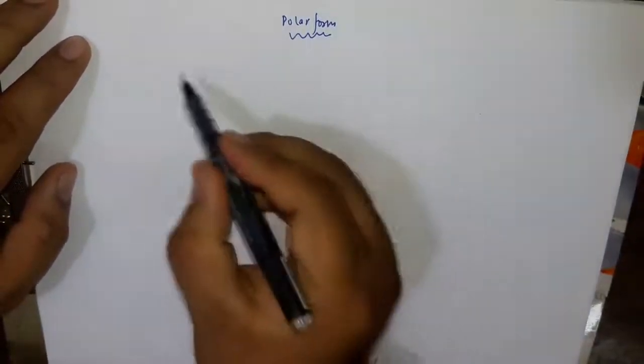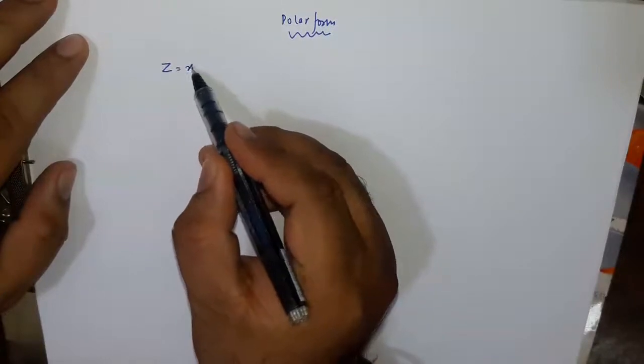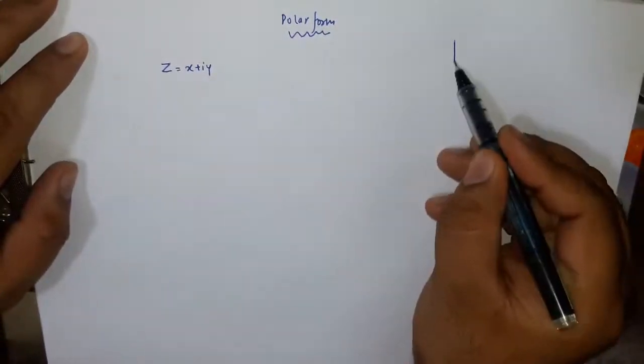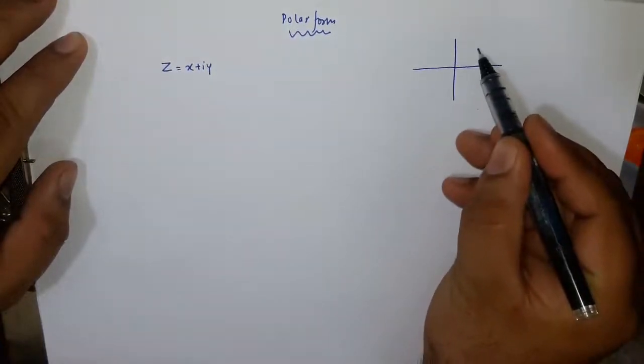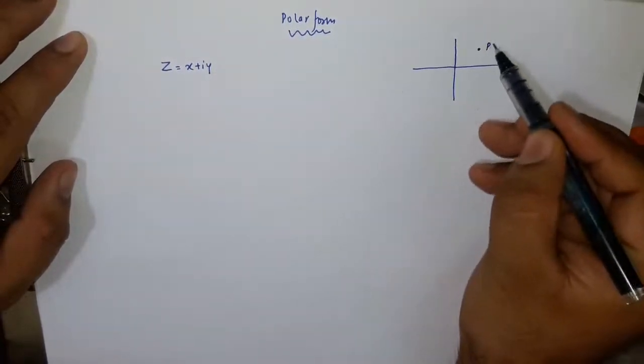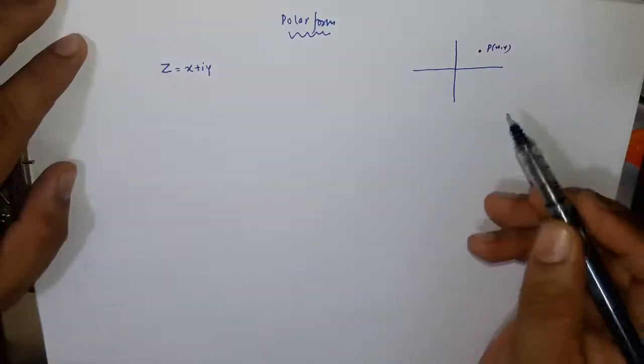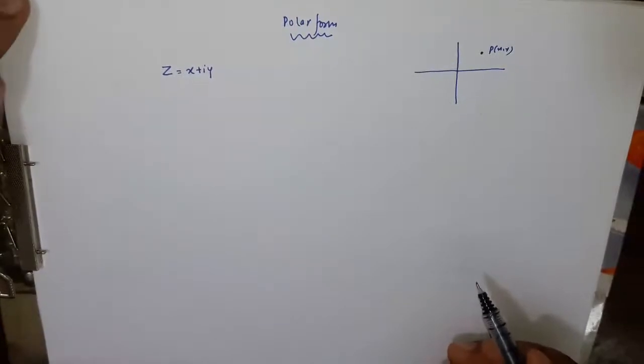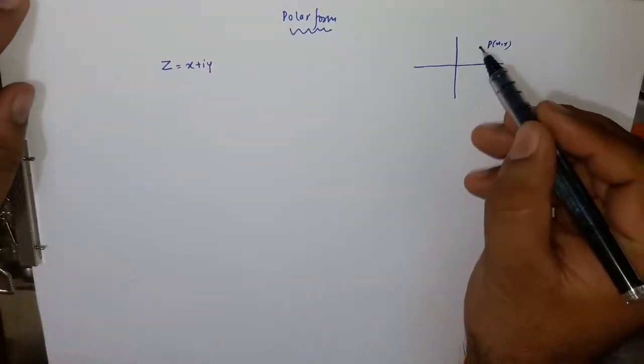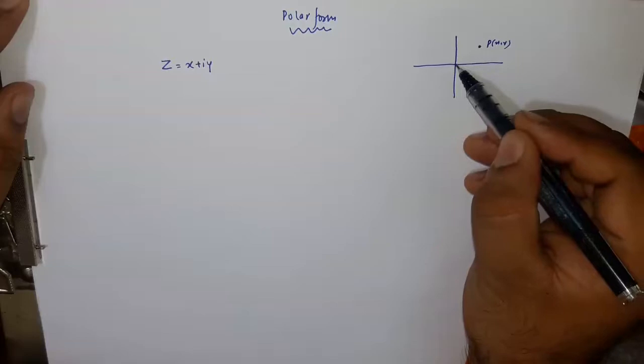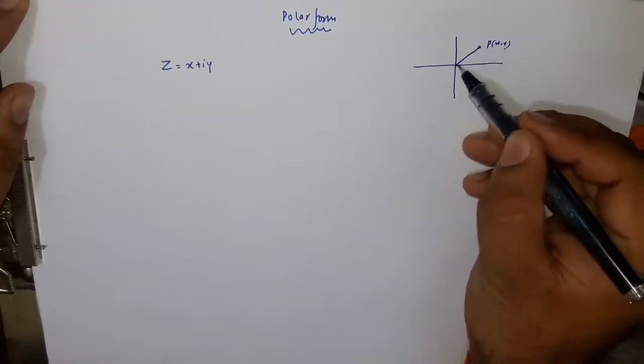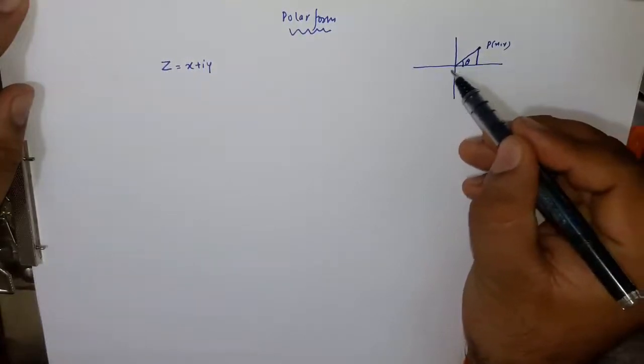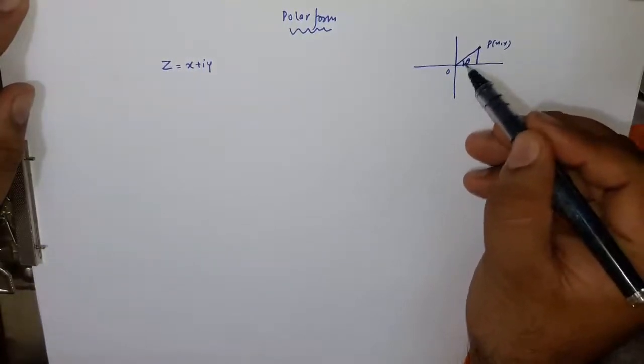What is the meaning of polar form? Any complex number which is in the form of x plus iota y, we know that we can plot this complex number on argand plane. For example, let this point be x, y. So this point is represented by this complex number x plus iota y. So what happens if we want its distance from the origin and what angle it makes, this OP vector or OP line with the x axis.